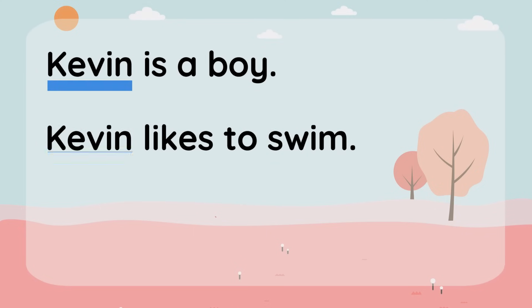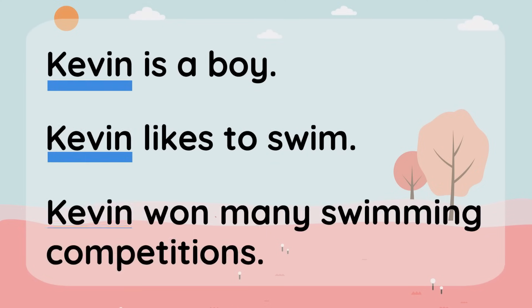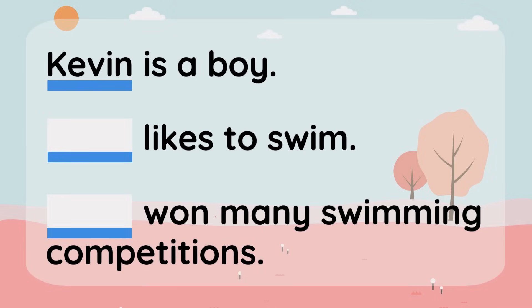Let's go back to the paragraph we read at the beginning of this video. Kevin is a boy. Kevin likes to swim. Kevin won many swimming competitions. How can we make these sentences flow more naturally using pronouns? We're going to replace all of the Kevins with pronouns, except for the first one, because we need to know who we're talking about. Kevin is a boy. He likes to swim. He won many swimming competitions. That sounded so much more natural!